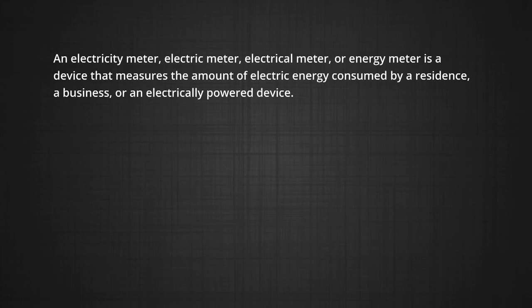For a negative differential resistance, it is a two terminal electronic component in which an increase in applied voltage across the component results in a decrease in electric current through the component. That is an electricity meter, electric meter or electrical meter or any energy meter, it is a device that measures the amount of electric energy consumed by the residence or any business house or any electrical device.